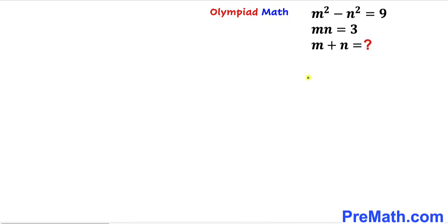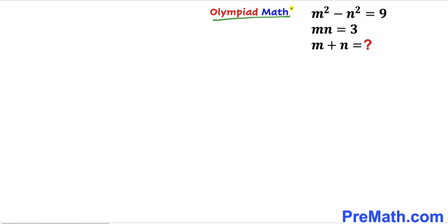Welcome to pre-math. In this video we have a system of equations: m squared minus n squared equals 9, and m times n equals 3. Our task is to find the value of m plus n. This is an Olympiad math problem.